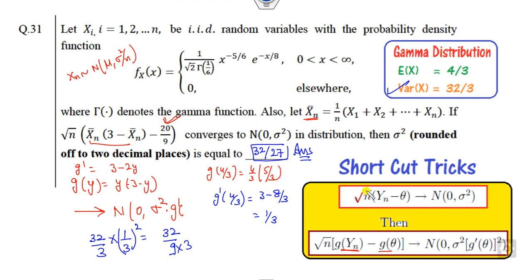So remember this is the shortcut trick. Whenever there is convergence, you have to find the root of this, then take the function and make sure that this value is non-zero. Because if it is 0 then the normal distribution is 0. So the right answer is sigma squared, that is 32 by 3.